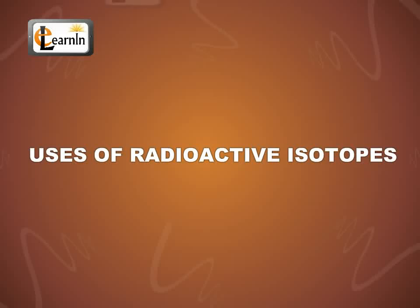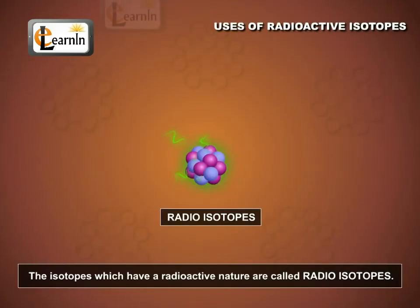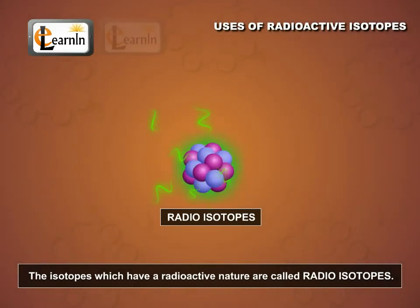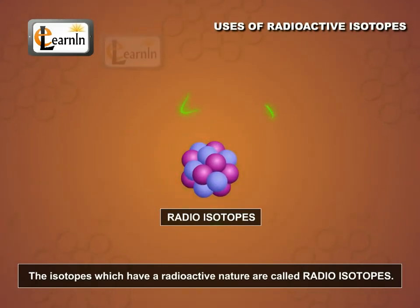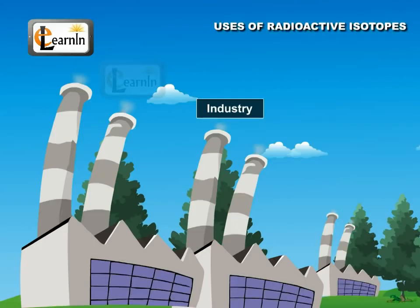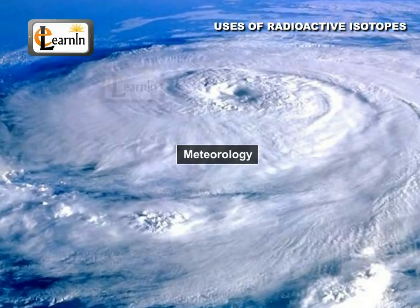Uses of radioactive isotopes. The isotopes which have radioactive nature are called radioisotopes. There are various applications for these radioisotopes, primarily in the field of medicine, agriculture, industry, and meteorology.